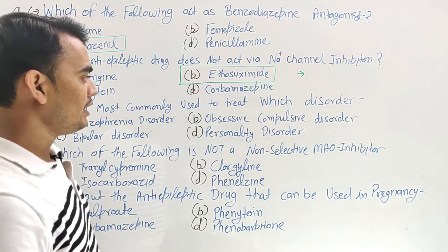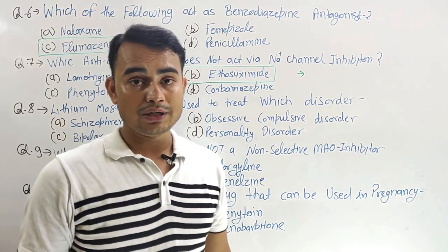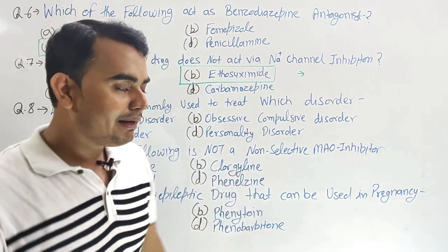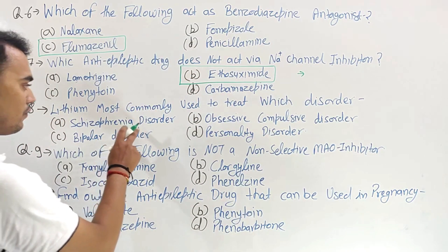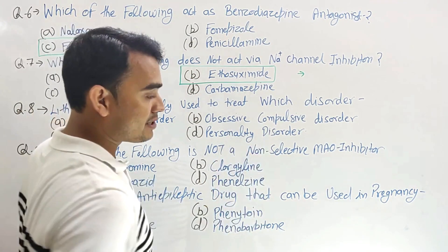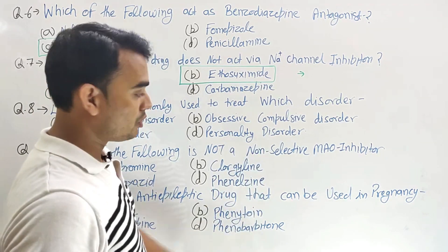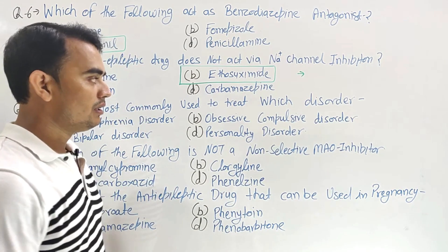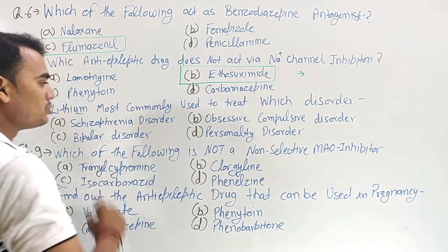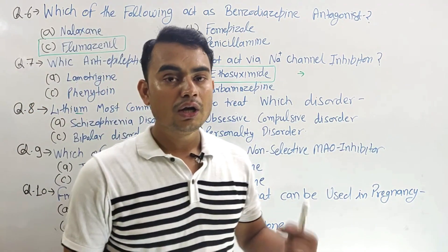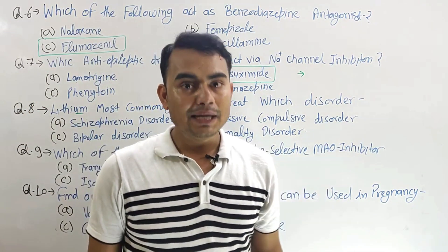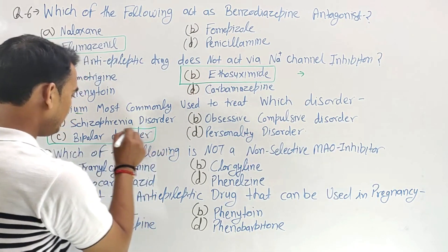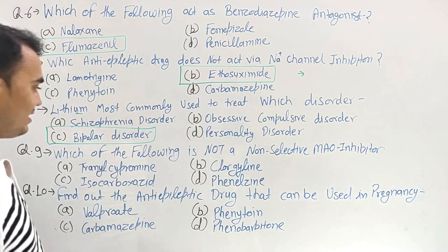Next question: lithium is most commonly used to treat which disorder? Lithium is used for schizophrenia disorder, obsessive compulsive disorder (OCD), bipolar disorder, and personality disorder. Lithium may be used for mood disorder or bipolar disorder. So the right answer here is bipolar disorder.